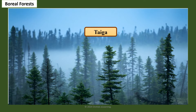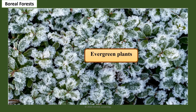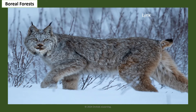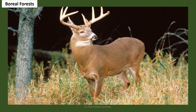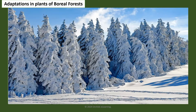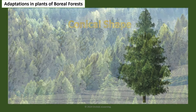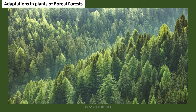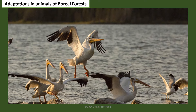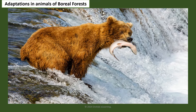Boreal forests, also called taiga, are characterized by very low temperatures. Plants found here are evergreen trees such as pine, fir, and spruce. Animals such as wolf, lynx, fox, deer, woodpecker, hare, and moose are found in this region. Boreal forests receive heavy snowfall; trees have a conical shape that allows snow to slide off easily. Trees also have narrow, needle-like leaves that protect them from damage. Most boreal animals migrate to warmer regions during winter, some hibernate, and some have a thick layer of fur or feathers to protect themselves from cold.